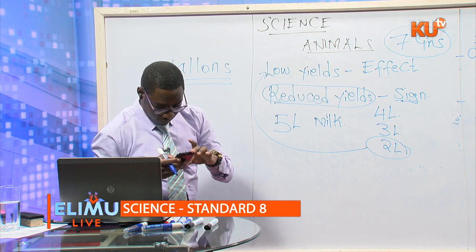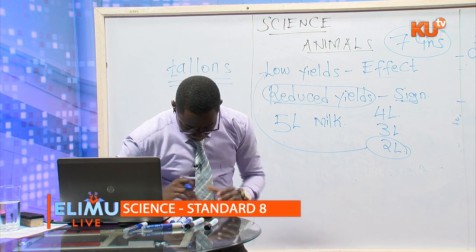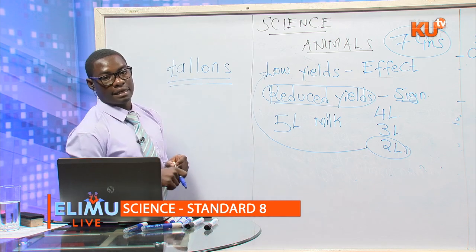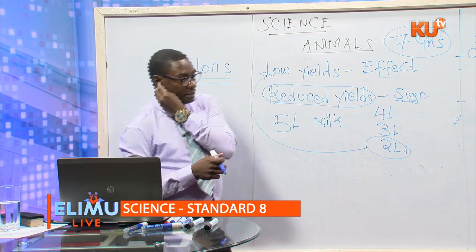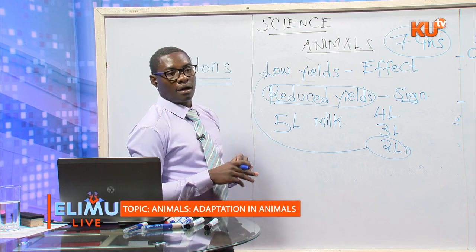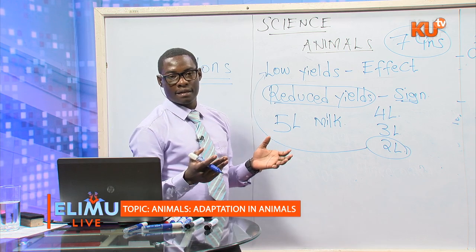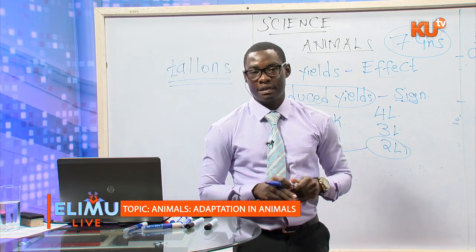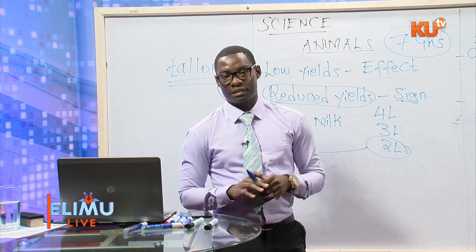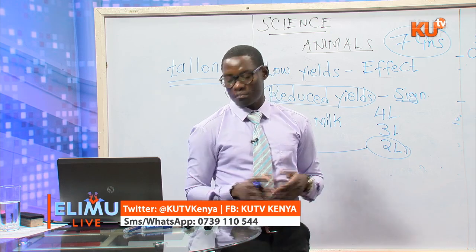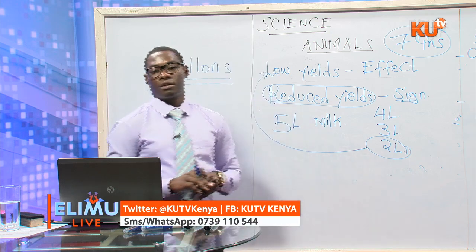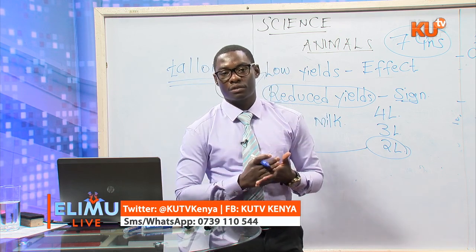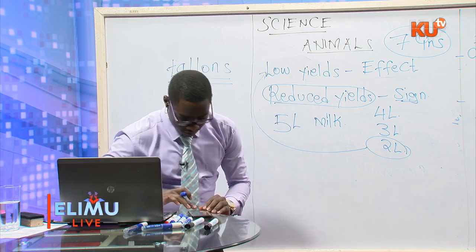A student asks: can carnivore teeth break while breaking bones? The answer is no. Adaptation means adjustments — the teeth of a carnivorous animal have been adjusted so that when they crush bones, they cannot break. Unlike our teeth, carnivorous animal teeth have been specially adapted to break bones without breaking themselves.